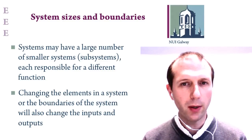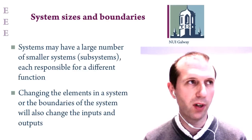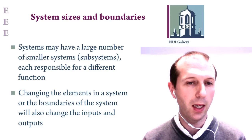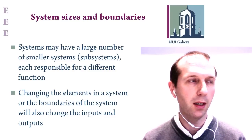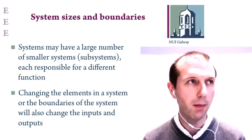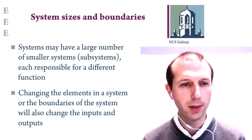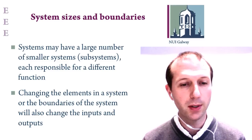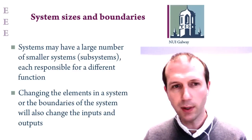Where to draw the boundary of a particular volume depends on how broadly or narrowly you want to define the function of a system. In a car, the system has a number of subsystems, each responsible for a different function — the engine management system, the electrical system, the window control system, the heating system, and so on. Where we draw the boundary will also change what the inputs and outputs to that system are, and changes which elements are contained within the system.